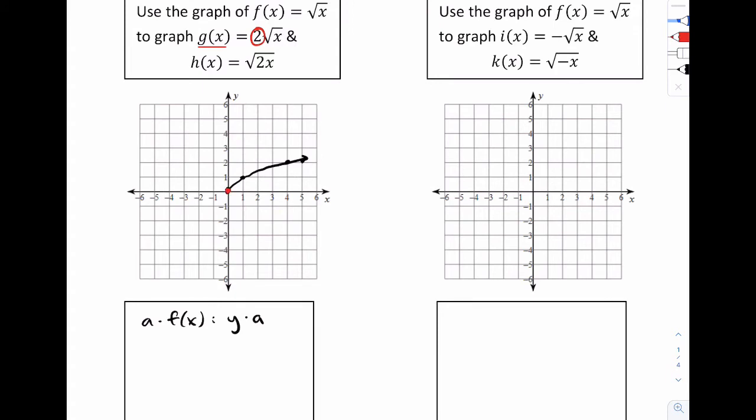So in this box right here, we're going to put some notes for transformation. If you have a times f(x), what that means is you have y times a. So for this graph, we're going to take all the y coordinates and multiply them by 2. So 0, 0 should stay. 1, 1 becomes 1, 2. And 4, 2 becomes 4, 4. So here's the graph where the y values multiplied by 2.